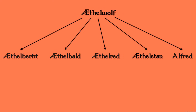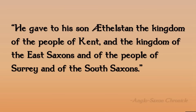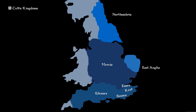We also want to look at King Æthelstan, because that adds an interesting dynamic to what was happening in Wessex at the time. This was actually Æthelwulf's oldest son, Æthelstan. We read in the Anglo-Saxon Chronicle: "He gave to his son Æthelstan the kingdom of the people of Kent, and the kingdom of the East Saxons, and of the people of Surrey, and of the South Saxons." So it's interesting to see there is still clearly a distinction between the core heartland of Wessex being ruled over by Æthelwulf, and then these other kingdoms more towards the East being ruled by Æthelstan.